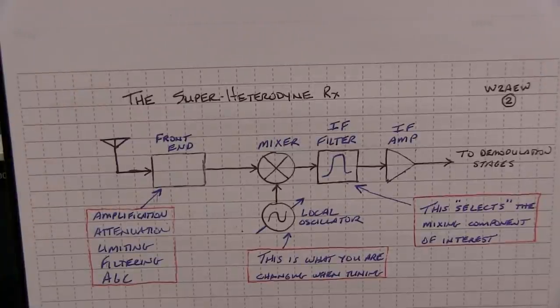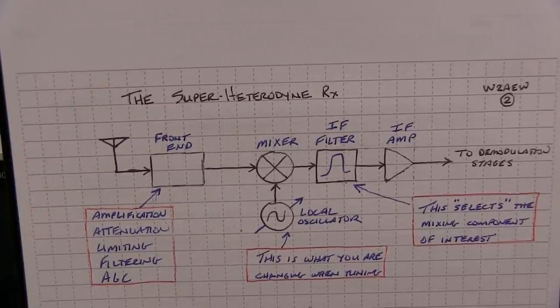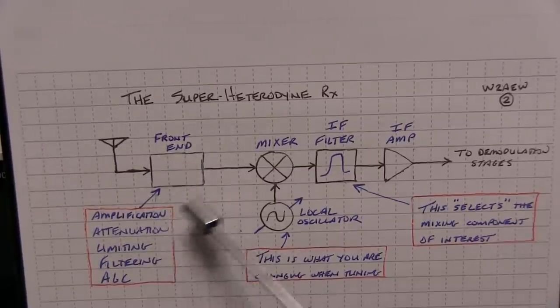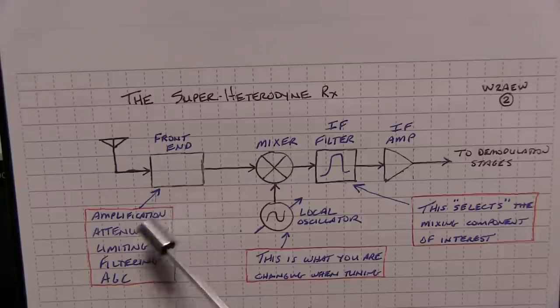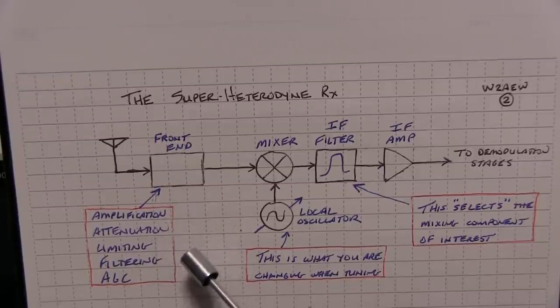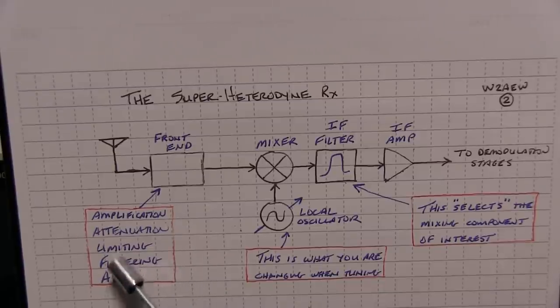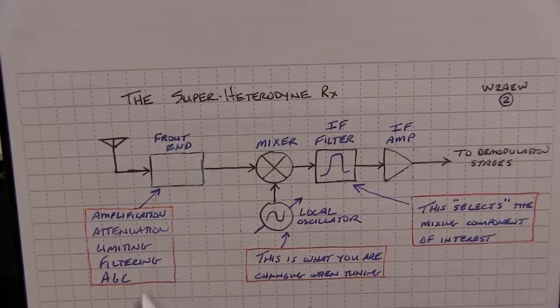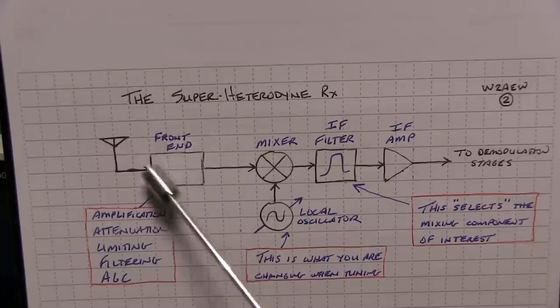So here's a highly simplified version of a single conversion superheterodyne receiver, or actually just a portion of it. Typically you'll have the antenna, and then some front end which will maybe include some amplification, maybe some attenuation, some limiting, maybe some filtering to get rid of images, etc. And also, oftentimes the gain control in this front end is part of the automatic gain control, or automatic volume control of the particular radio. And that's typically what's in the front end.